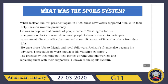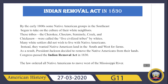Jackson wanted common people to have a chance to participate in government. Once in office, he removed about 10% of the federal workers from their jobs and gave those jobs to his friends and loyal followers. Jackson's friends also became his advisors, known as his 'kitchen cabinet.' The practice of incoming political parties removing old workers and replacing them with their supporters is known as the spoil system — in simple words, giving government jobs to political backers.